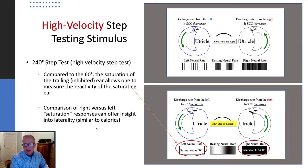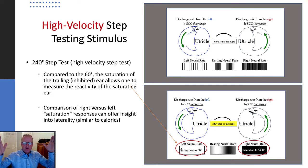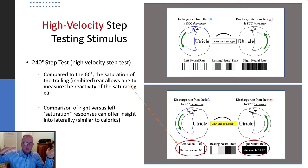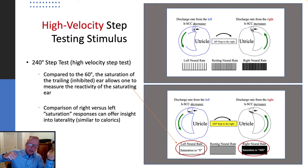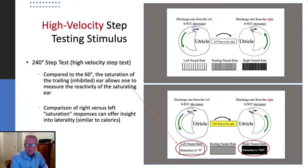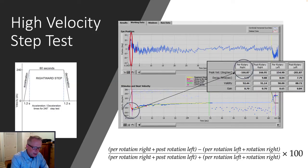In doing that, what happens is that the trailing ear's cupula are now enduring such a long period of acceleration — 1.2 seconds, which is a long time for neural response rates — that it saturates the trailing ear, providing a nystagmus response that's reflective of just the excitatory leading ear.